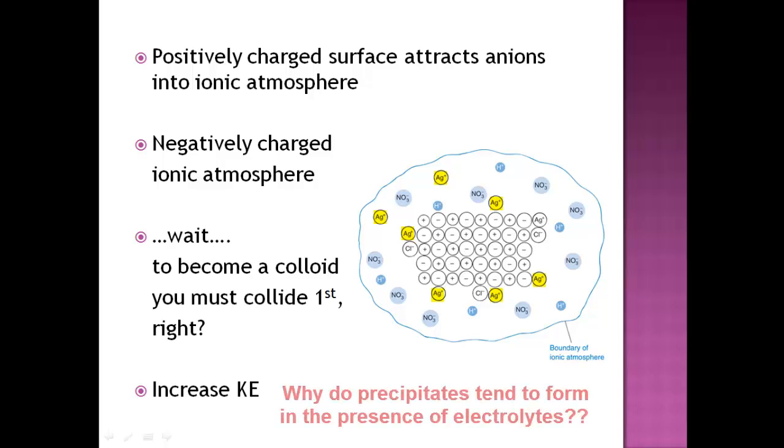Remember the original question? The original question was precipitates tend to form in the presence of electrolytes. And this is more or less the big finale. So if you increase the electrolyte concentration, in this example it would be nitric acid, that's going to decrease the thickness of the ionic atmosphere, and that actually allows particles to approach closer together before that repulsion becomes significant.